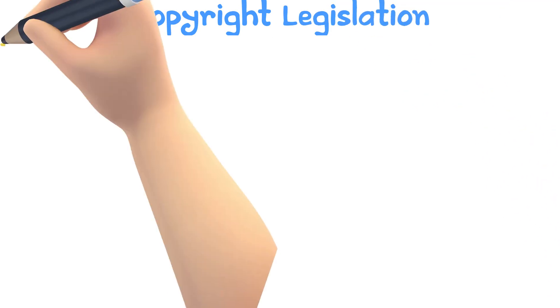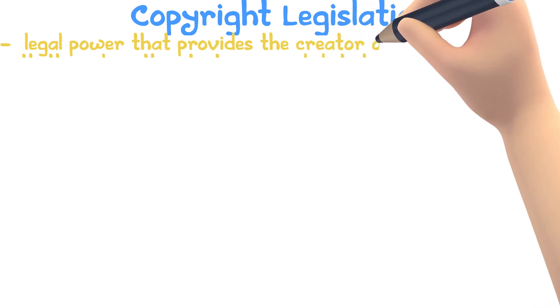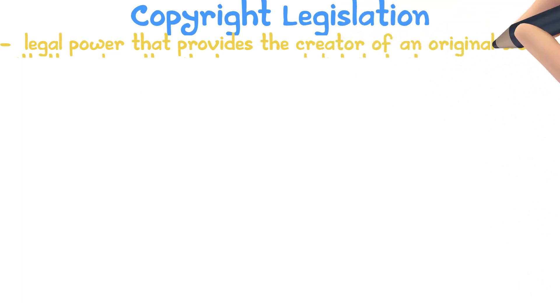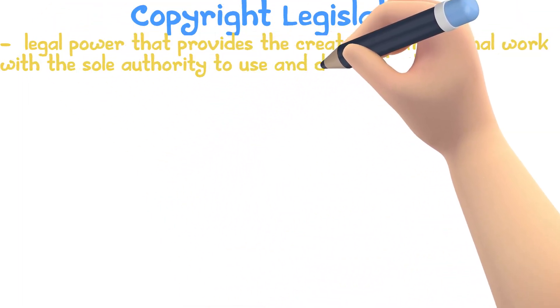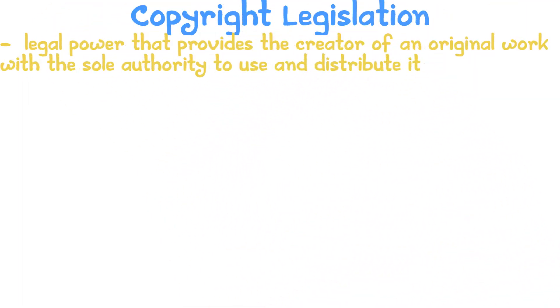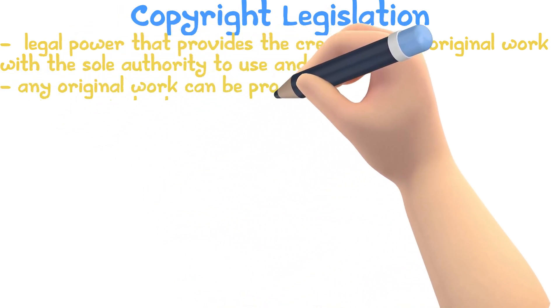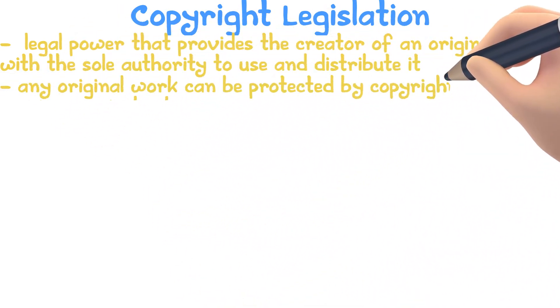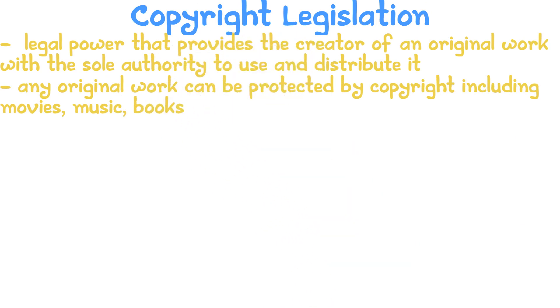Copyright legislation: what is copyright? Copyright is a legal power that provides the creator of an original work with the sole authority to use and distribute it. Every country has different copyright laws, some even have laws to prevent people stealing work and publishing it in another country. Any original work can be protected by copyright, including movies, music, and books.